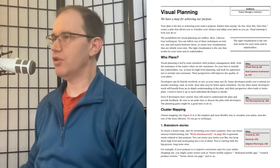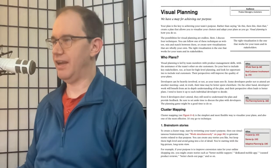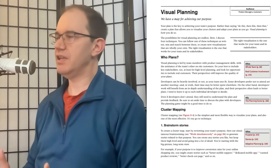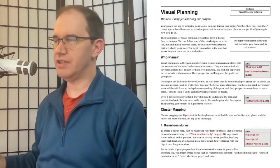Visual planning. We have a map for achieving our purpose. Your plan is the key to achieving your team's purpose. Rather than saying, do this, then this, then that, create a plan that allows you to visualize your choices and adapt your plans as you go. Visual planning is how you do so. The possibilities for visual planning are endless. Here, I discuss four techniques. You can follow one of these techniques as written, mix and match between them, or create new visualizations that are wholly your own. The right visualization is the one that works for your team and its stakeholders.